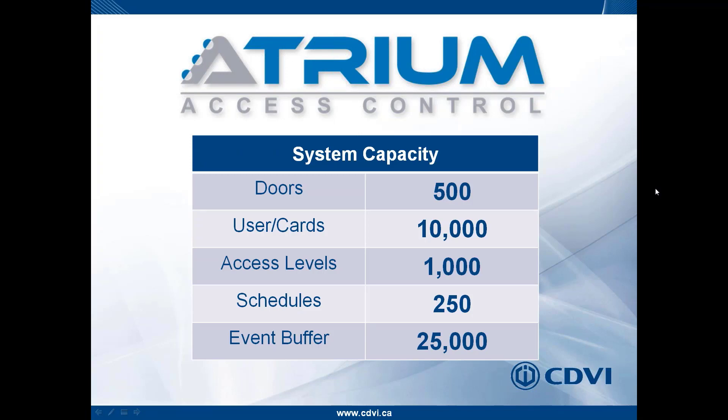There are 1,000 access levels. These permit you to allow or deny access to individual doors according to individual schedules. Typically you'll use access levels to group different departments — in a condominium: tenants, service, and maintenance; in a company: administration, accounting, shipping, and production — giving different groups different access rights at different times to different doors.